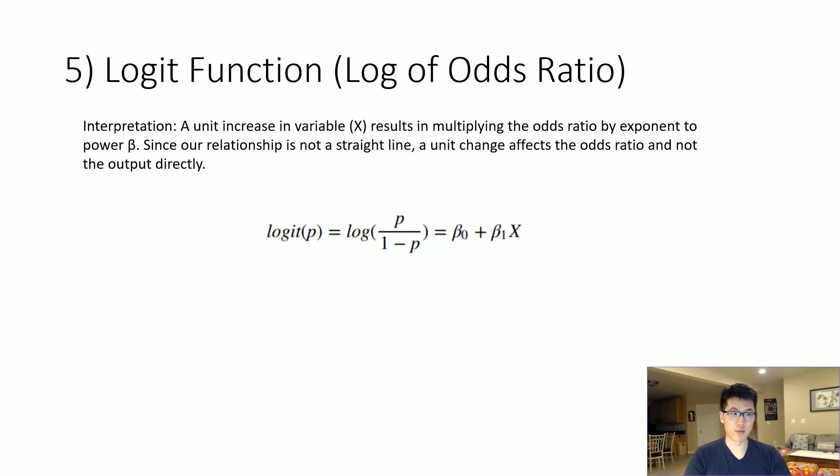We would essentially plug in our odds ratio into something we call the logit function to plot our y variable. We would essentially plug in our odds ratio into this logit function that we have over here, and this is what we will plot on our y-axis in order to determine what our model will essentially be predicting.